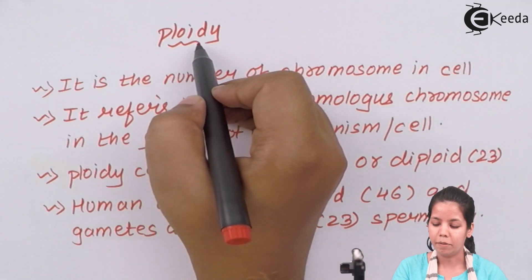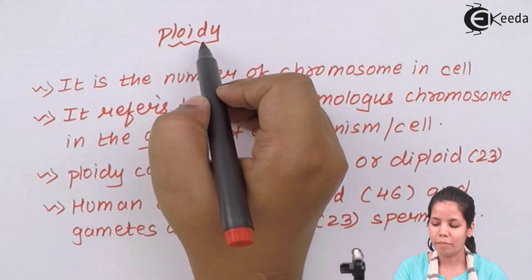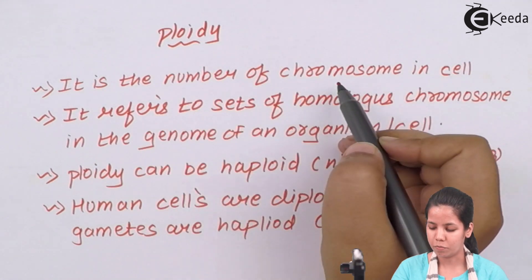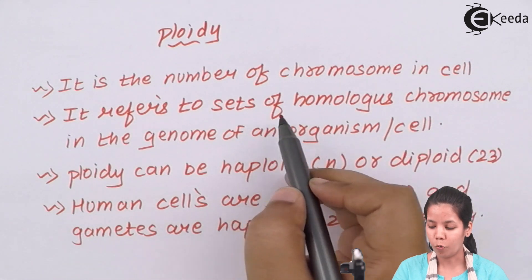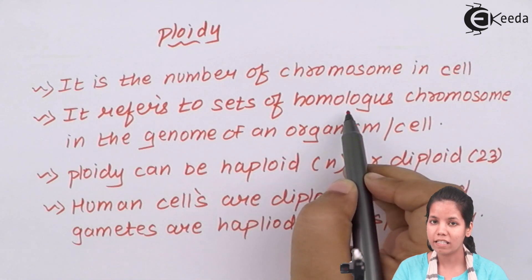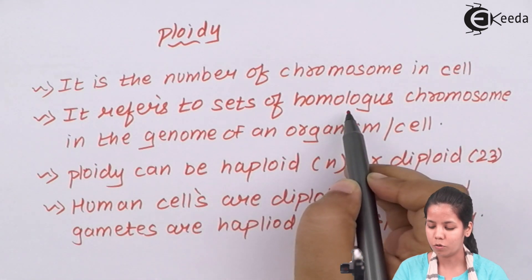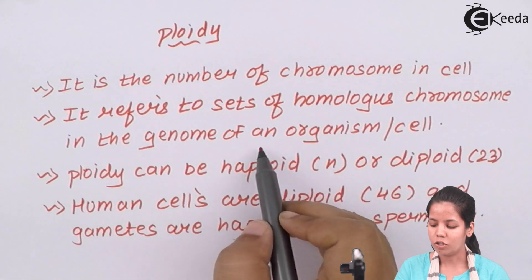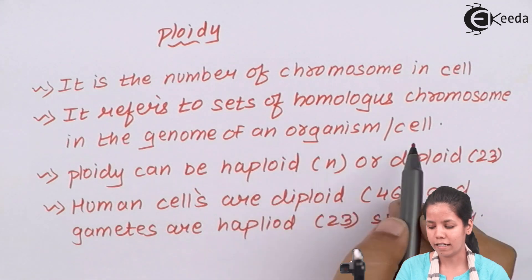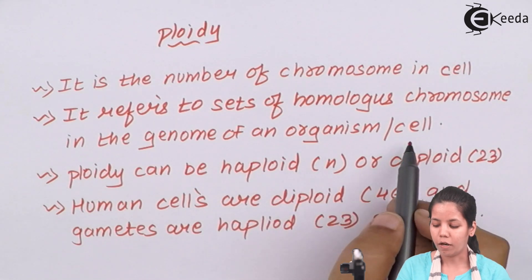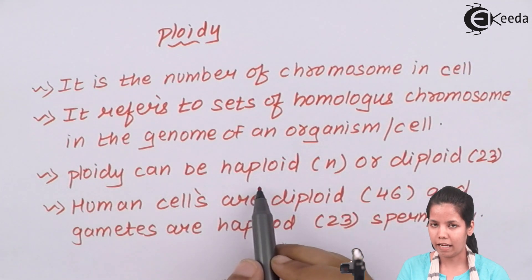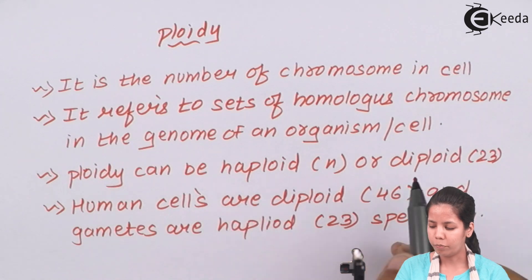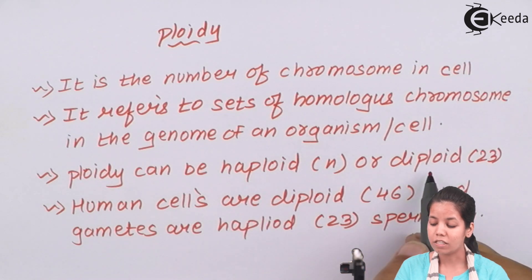Ploidy means the number of chromosomes. It refers to the set of homologous or similar living chromosomes in the genome of an organism or inside a set. Now Ploidy can be haploid, that is n, or it can be diploid, which is 2n.